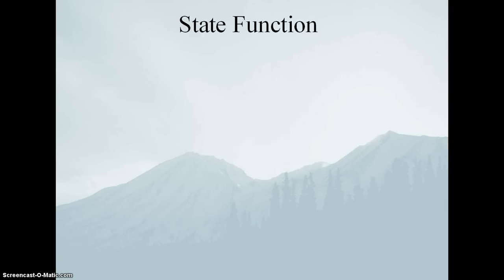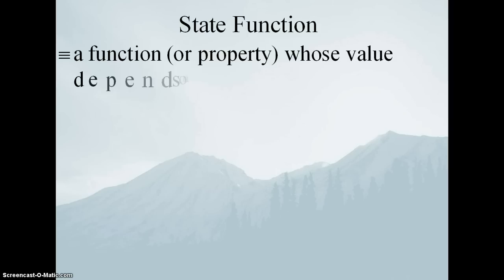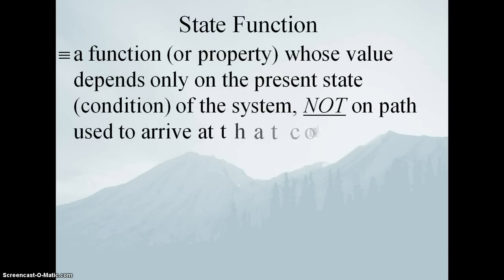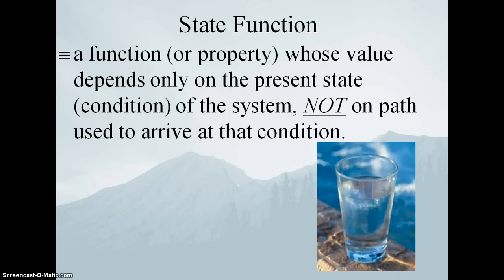So last couple of definitional things. A state function is a function of state. It's a function or property whose value depends only on the present state or condition of the system, not on the path used to arrive at that condition. You're familiar with this concept. Here's a measured property of a system. When I measure it, it doesn't matter what were the conditions before I measured it. For example, here's a glass of water. The temperature of this glass of water, I take the temperature, it doesn't make any difference that last night it was 15 degrees because I kept it in the refrigerator, or that I had it outside and it got to be 35 degrees out in the sun. It doesn't matter. When I'm measuring at 25 degrees, I only care about the temperature is 25 degrees. I don't care about the previous conditions. Same with volume, or pressure, or even density.